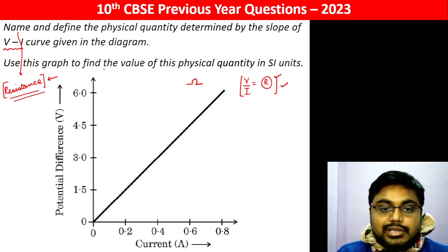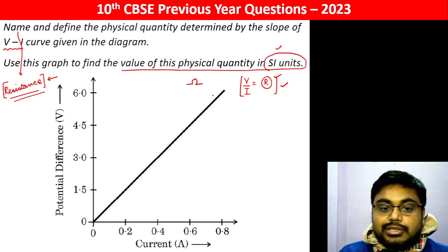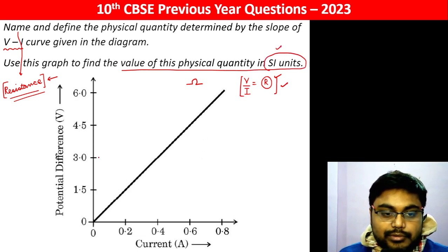Use this graph to find the value of this physical quantity in SI units. Now from this graph, we will find out, say, 4.5 and 0.6.